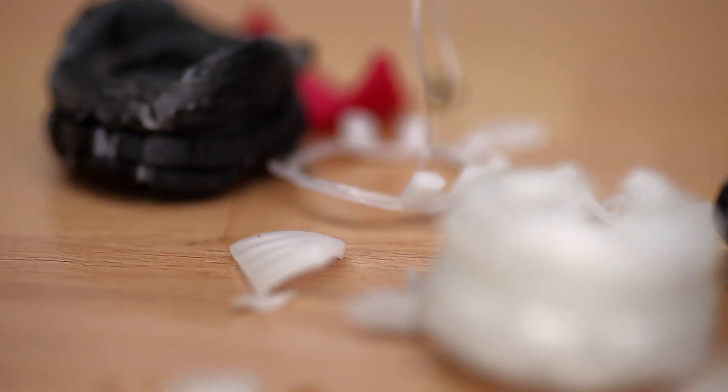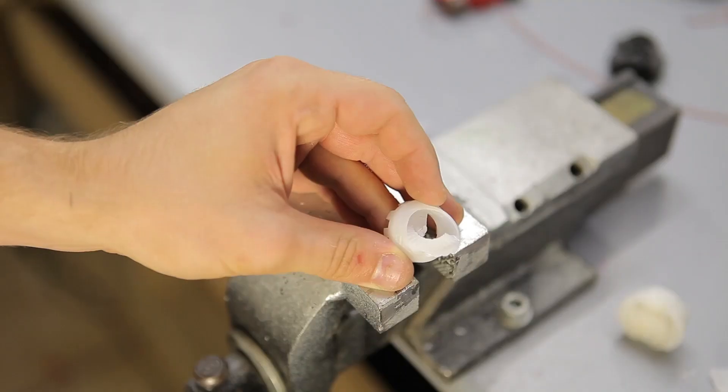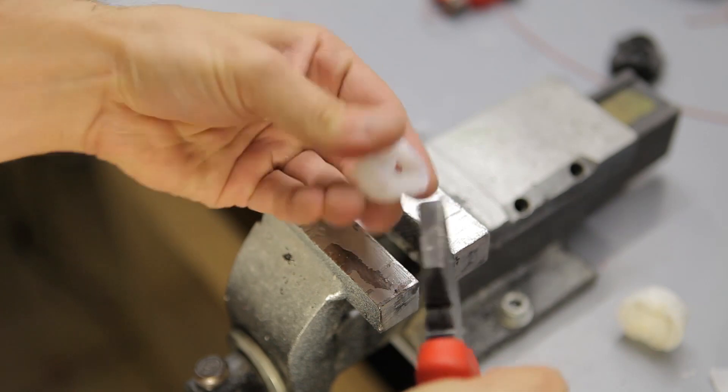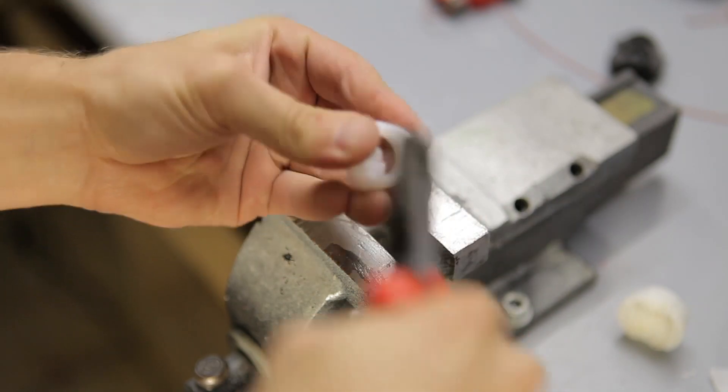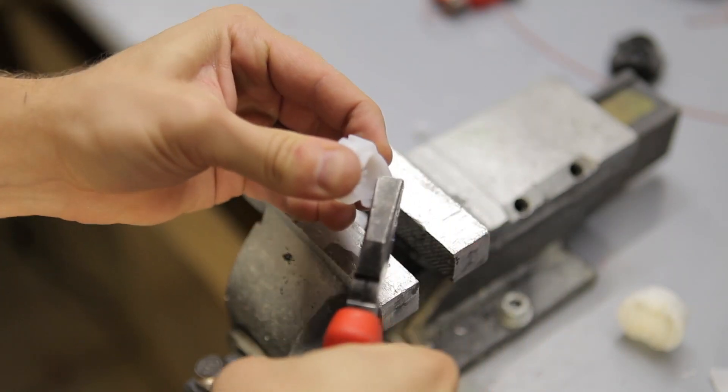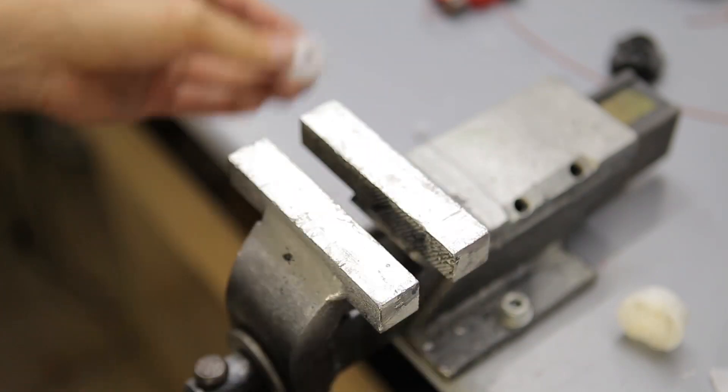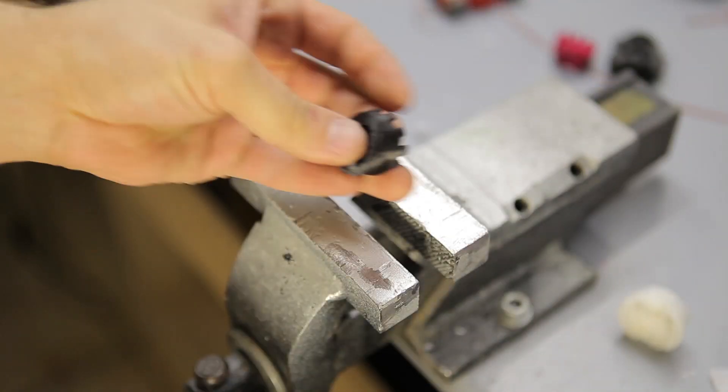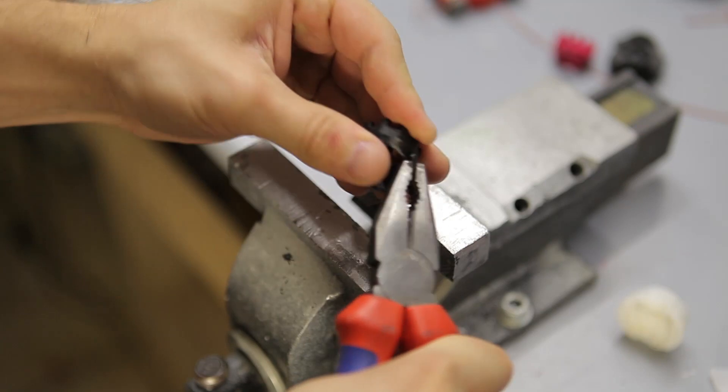The Formlabs resin printed part, for one, is very detailed and actually pretty strong, but it does not fail gracefully at all. So if you're designing parts that are going to carry any kind of load or tension, I would probably choose a different material.